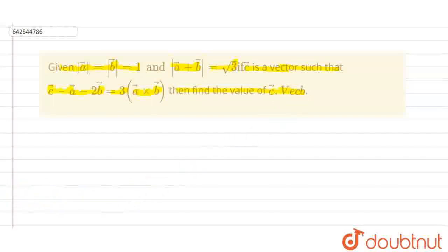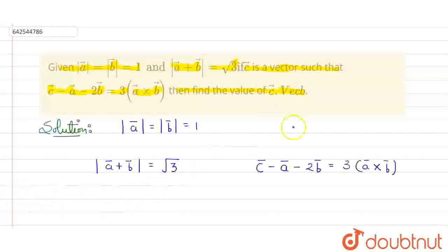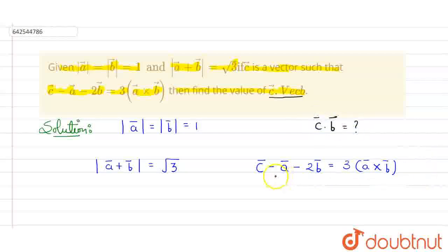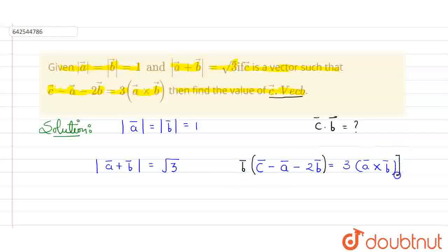Let me write the given quantities and we will try to solve it. We have to find the value of C dot B — the dot product of C and B. For finding the value of C dot B, I am only having C here. So if I multiply this whole equation with vector B on both sides, then I can get C dot B.